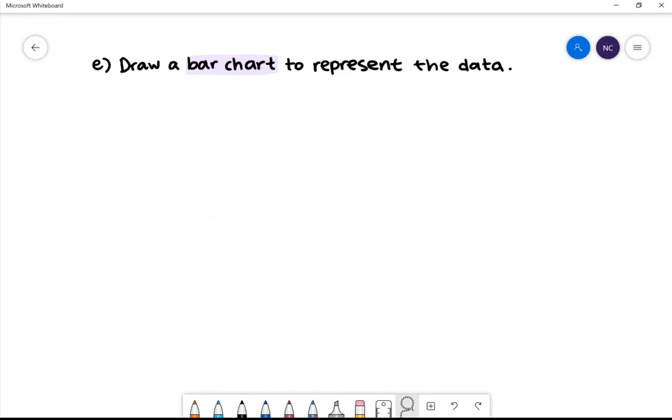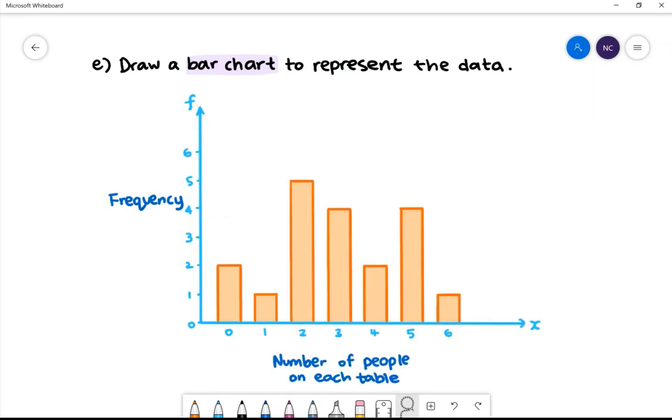In part E, we want to draw a bar chart to represent the data. On our graph, we have the number of people on each table on the x-axis and the frequency on the y-axis. Ensure that your bar chart has equally spaced gaps between all the columns as well as a gap between the y-axis and the first column.